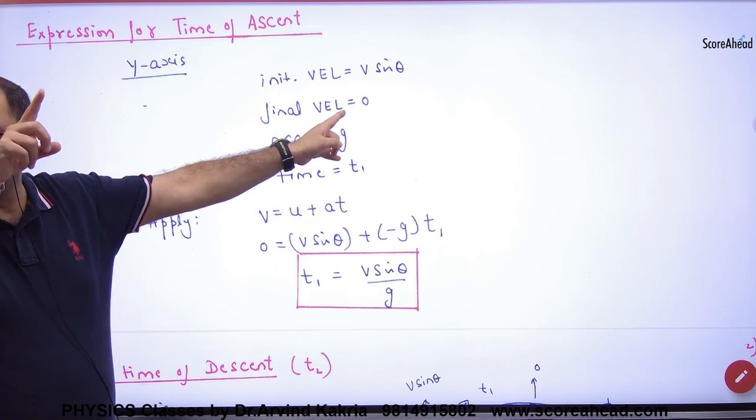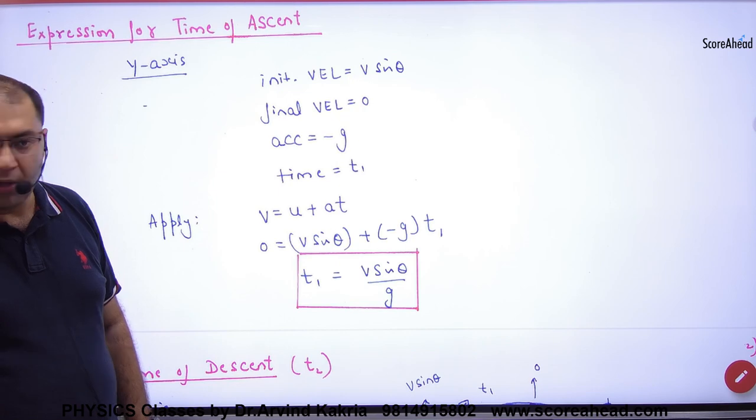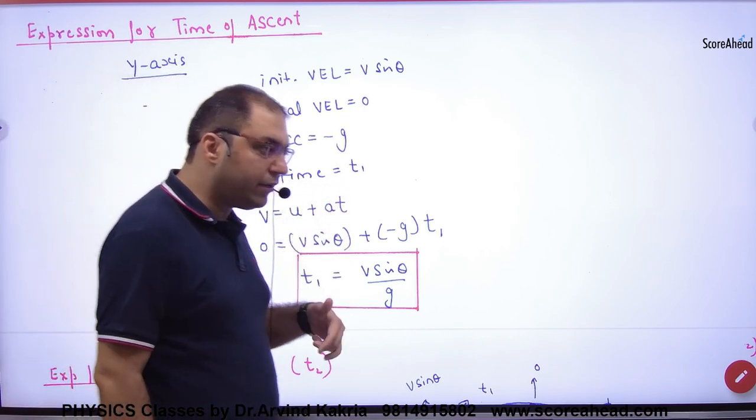When the body is going up against gravity, the acceleration due to gravity is minus g. So how much time will the body take to go up? t1.